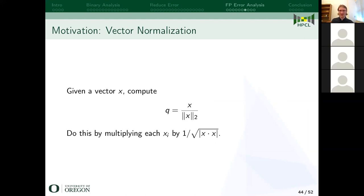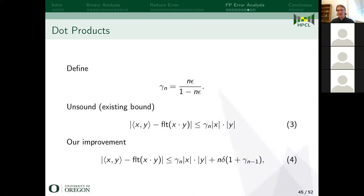Let's look at a slightly more complicated operation: normalizing a vector. We take the length of the vector and divide every element by its length. In practice this is done as: one divided by the square root of X dot X. So we see a summation in the dot product and a division in the square root. This is one of the improvements I made — there was an existing unsound bound by Nicholas Higham. The key difference is the N-times-delta term, which is how you make the bound sound.